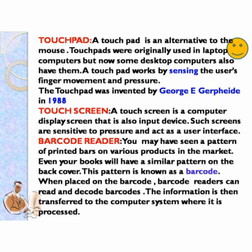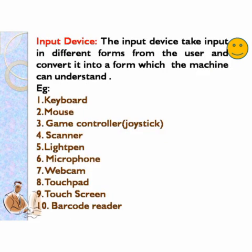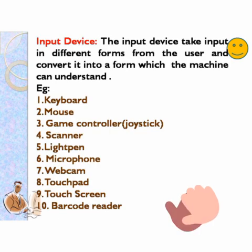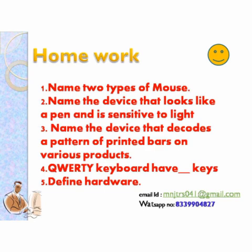So we discussed all the input devices, from keyboard to barcode reader. Now homework time — five questions are there. Answer them and send to my email ID or WhatsApp number.